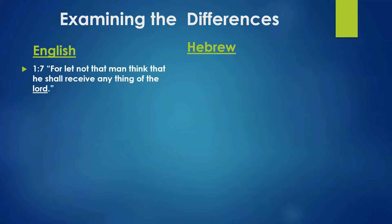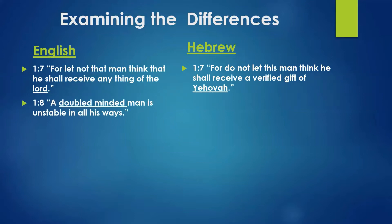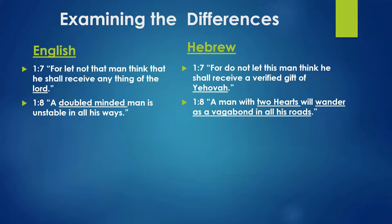Now let's get started. The first one we come to is chapter 1, verse 7. In the English: 'For let not that man think that he shall receive anything of the Lord.' In the Hebrew: 'For do not let this man think he shall receive a verified gift of Yehovah.' So right out of the gate, it's using God's holy name instead of 'the Lord.' Verse 8 in the English: 'A double-minded man is unstable in all his ways.' In the Hebrew: 'A man with two hearts will wander as a vagabond in all his routes.' These are examples of slightly different words, but they're still stating the same thing — the Hebrew James does a lot of that without changing the meaning of the sentence.